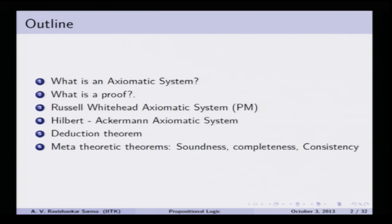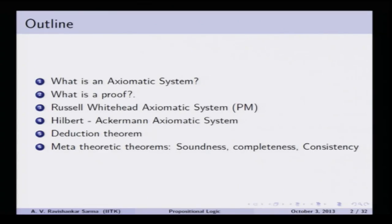Then we will talk about some important meta-theoretic theorems such as soundness — whether all the things you are proving are going to be true. In a proof, the last step is considered to be a theorem, which is obviously true. Soundness ensures that all the things derived are true, and completeness assures us that all true propositions find some kind of proof.